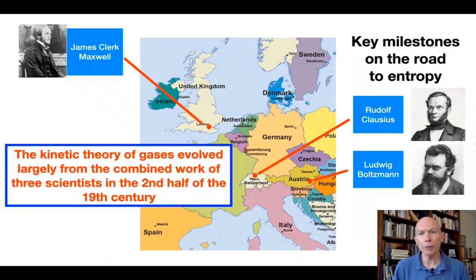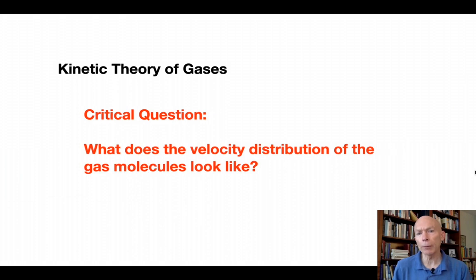Again, the key milestones on the road to entropy ended with the development of the kinetic theory of gases by three scientists in the second half of the 19th century. You had Rudolf Clausius in Switzerland, James Clerk Maxwell in England, and then Ludwig Boltzmann in Austria. We're focusing on Boltzmann today, but I want to review briefly what these three did, specifically around the critical question of what does the velocity distribution of the gas molecules look like.